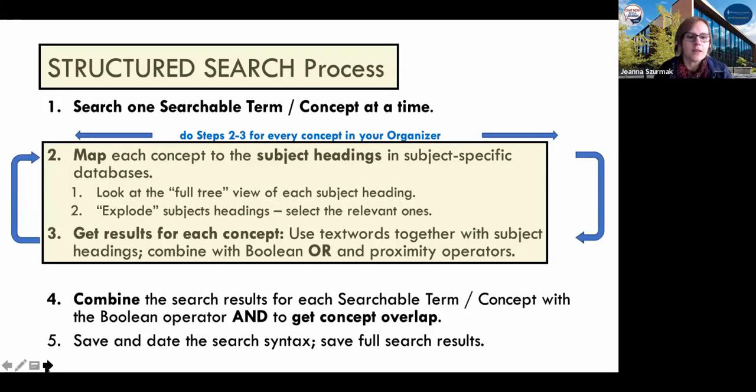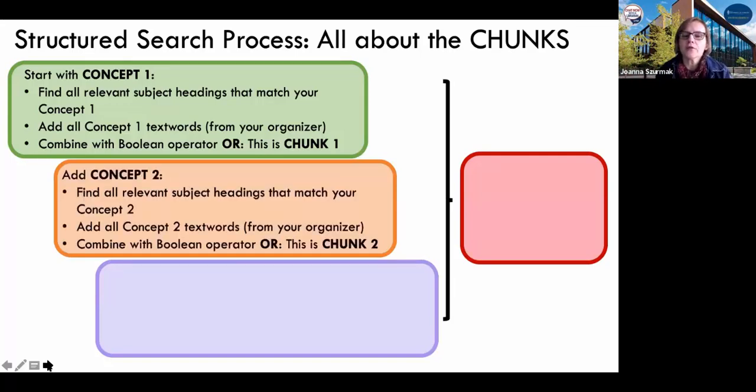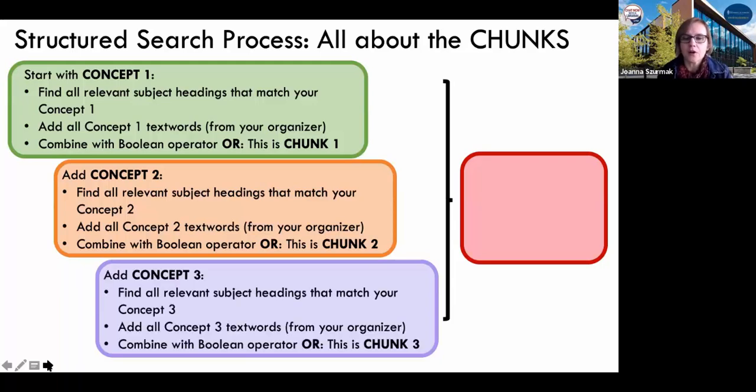You work with concept chunks. For concept one, you go through all the subject headings from the thesaurus, you connect all the other words that are related with ORs, and you leave that result alone. It could be several hundreds of thousands of results. That's fine. This is the entire concept space for your concept one. You move on to concept two and do exactly the same thing. Once you've explored each of your concepts, doesn't have to be three, could be two, could be five, you combine these concept chunks and see what is the overlap. How do you do that? Using ANDs.